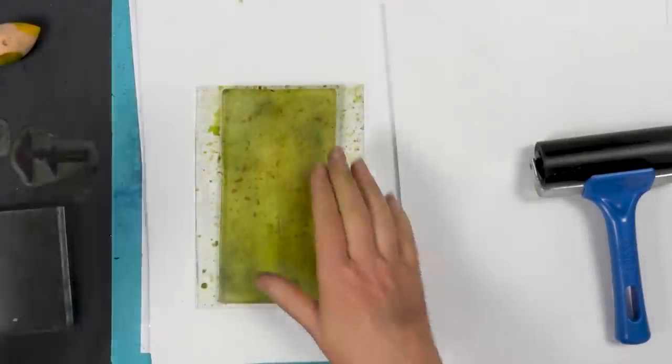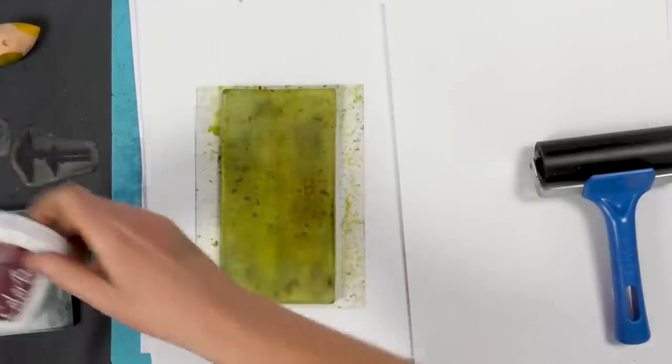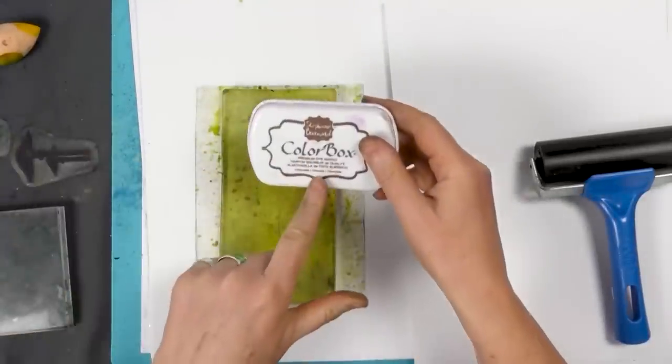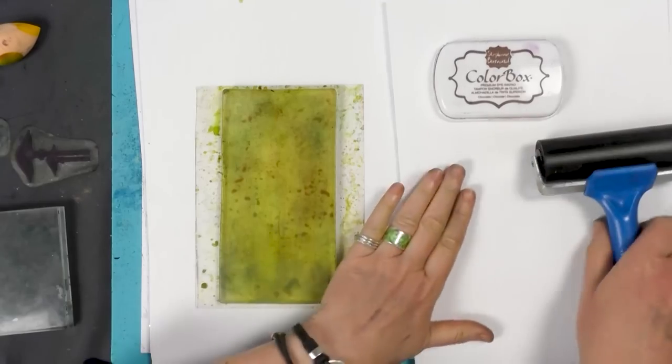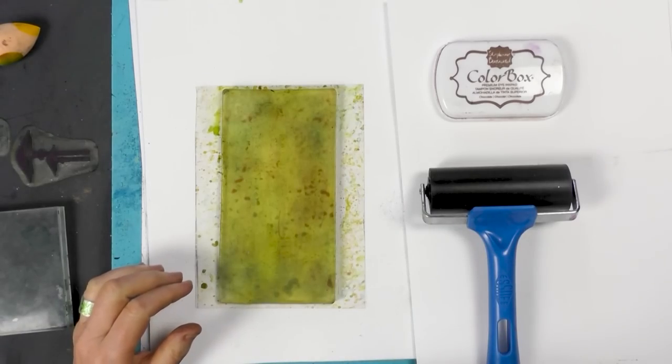We're going to be using our gel press and colour box. I think we're going to be using the chocolate. So we're going to need my brayer and we're also going to be using our brushos that I've mixed with some water.